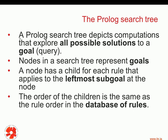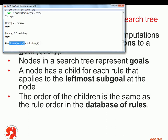When Prolog is finding a solution, it's building a search tree. The search tree depicts computations that explore all possible solutions to our goal. The nodes in a search tree represent the goals. A node has a child for each rule that applies to the leftmost sub-goal at the node. For example, if we have a query like drinks(John,x), drinks(Tom,x), this would be the root of the search tree, and this root node would have a child that applies to the leftmost sub-goal.